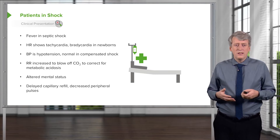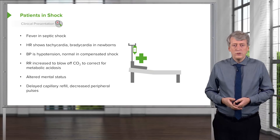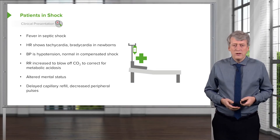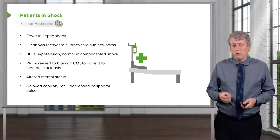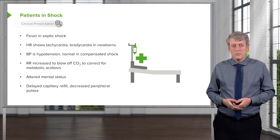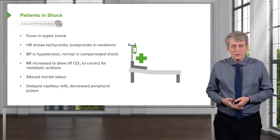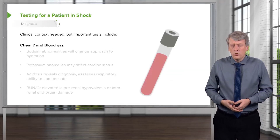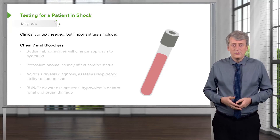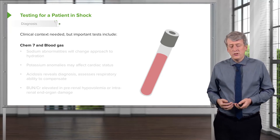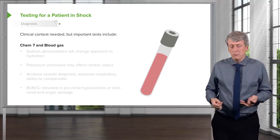We can also see decreased peripheral pulses, although capillary refill is usually your first indicator. When assessing cap refill, the nails are a fine place to look, but if the patient has cold extremities that will be an inaccurate assessment — so you should assess it somewhere centrally, like over the glabella. Just press and release and count the seconds. When seeing a patient in shock, we need the clinical context — whether this is a febrile patient with pneumonia or a patient who was hit by a car and is bleeding.